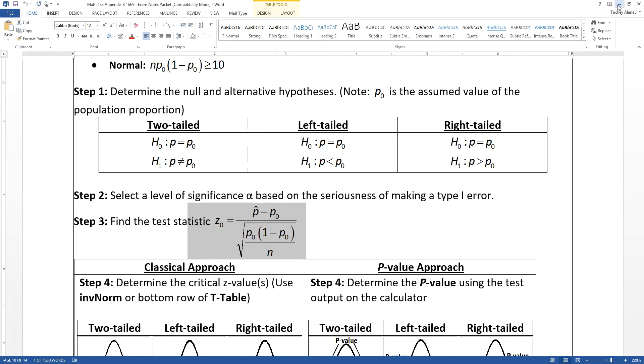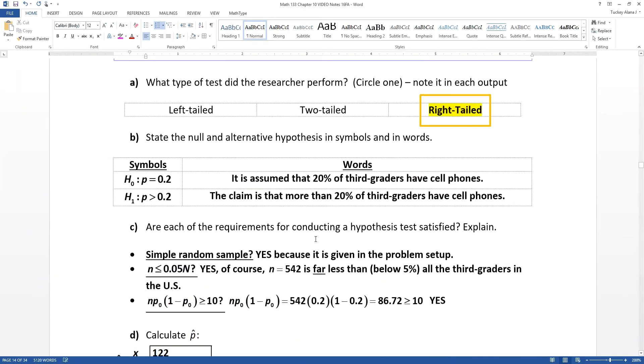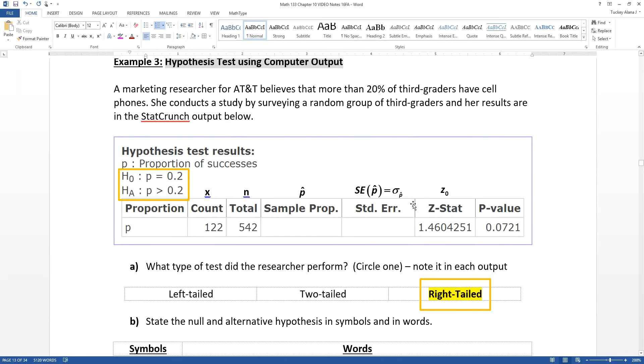So we don't need all of that because it's given to us in the problem. They tell us that Z₀ is 1.4604. So it's all calculated for us. So we're going to use that fact.